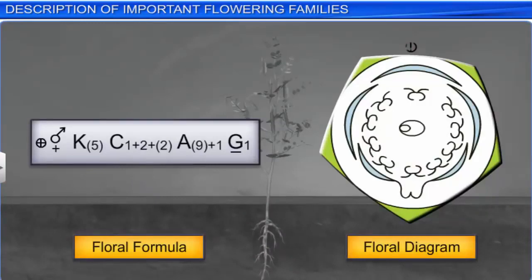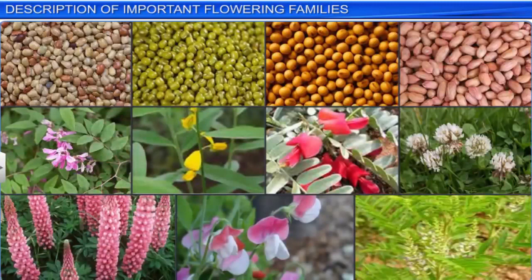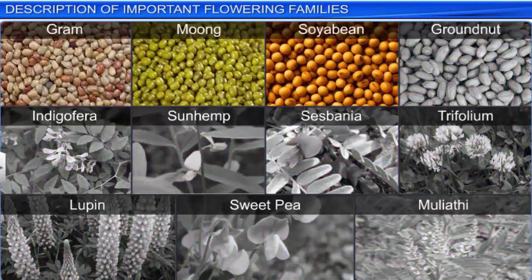The economic importance of plants belonging to the Fabaceae family is significant. Gram, moong, and soya bean are pulses; soya bean and groundnut produce edible oil. Indigofera is a dye, sun hemp is a fiber, sesbania and trifolium are used as fodder, lupine and sweet pea are ornamental plants, and mulaiti is used as a medicine.